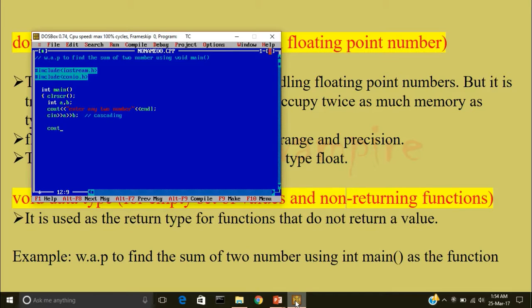Now cout, I will display the answer less than less than sum of the two numbers is less than less than a plus b. Get ch. Now when we are using int main as a function we will write additional statement return 0. Then I will close the program.